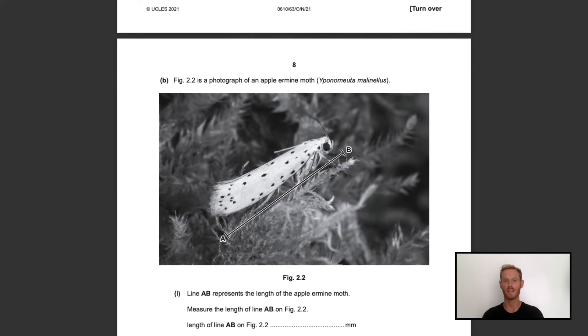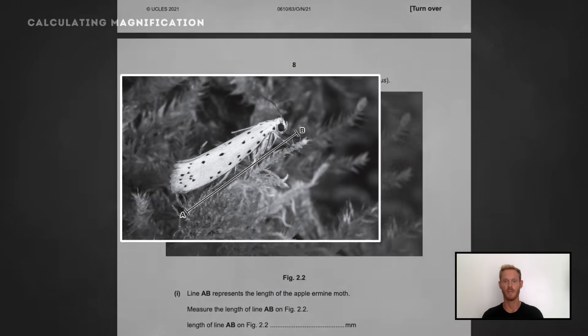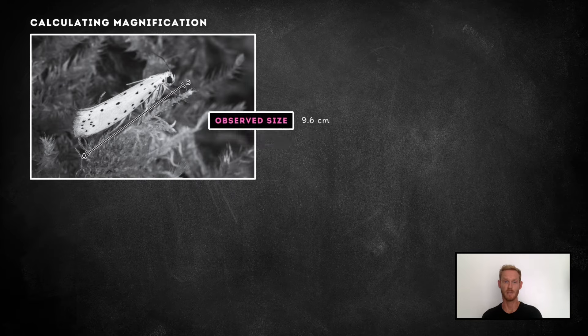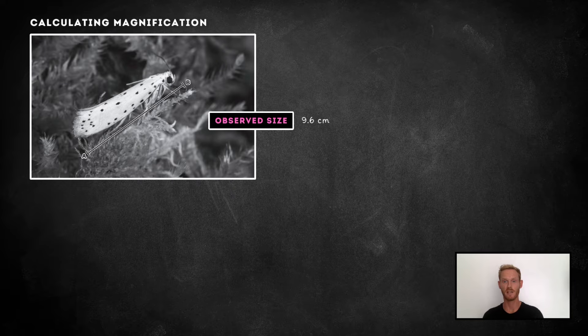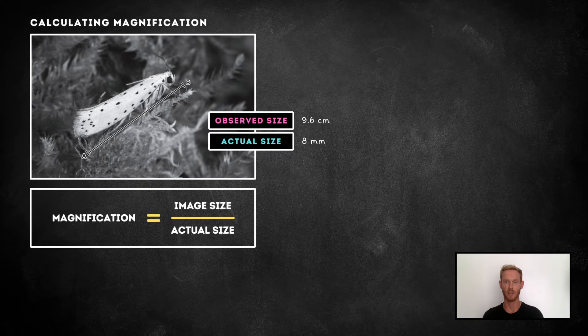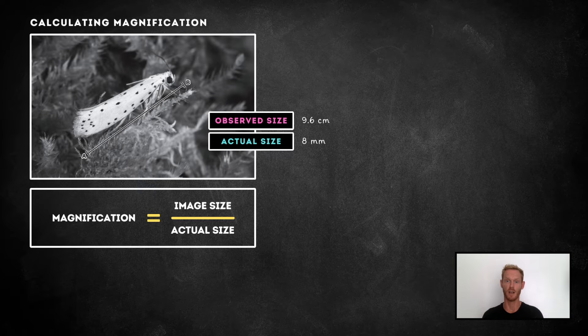In exam questions, you may be asked to calculate magnification from a drawing or photo micrograph. If so, you'll be provided with two pieces of information: the size of the specimen in the image, or the observed size, and its actual size. The equation for calculating magnification couldn't be simpler, but before entering the figures provided, you need to make sure that the units of both sizes are the same.